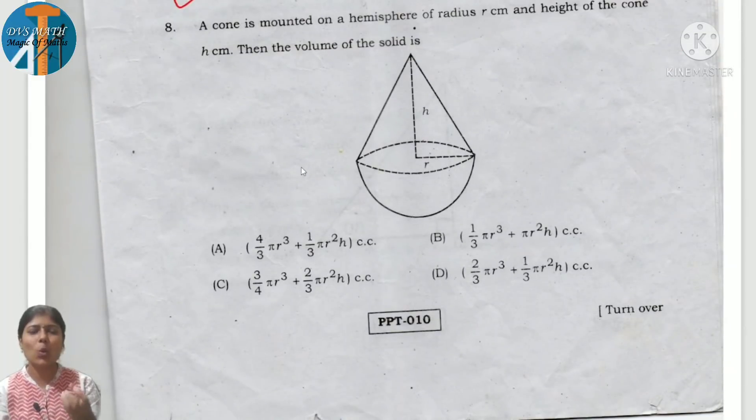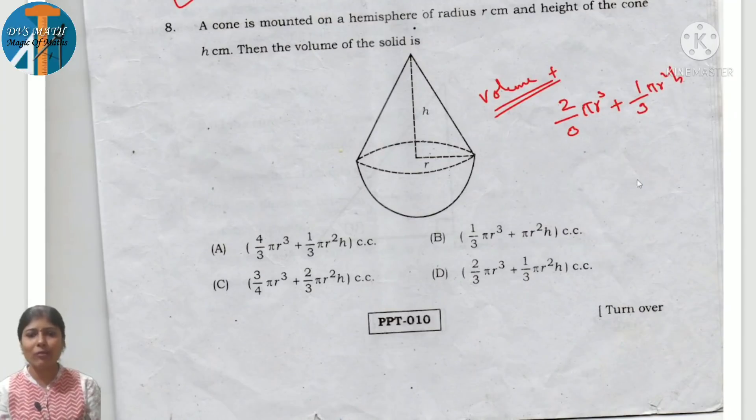Question number 8: a cone is mounted on hemisphere of radius r centimeter and height of cone h centimeter, then the volume of solid is. It is placed one above the other. Volume is volume of hemisphere plus volume of cone. Hemisphere: 2 by 3 pi r cube plus cone: 1 by 3 pi r square h. 2 by 3, 1 by 3, and option D is correct answer.